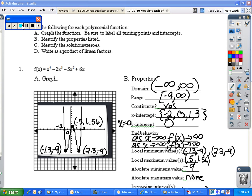First page, we're going to look at some properties. For each of the graphs, we are going to graph the function, label turning points and x-intercepts, identify the properties listed, solutions, and write as a product of linear factors.